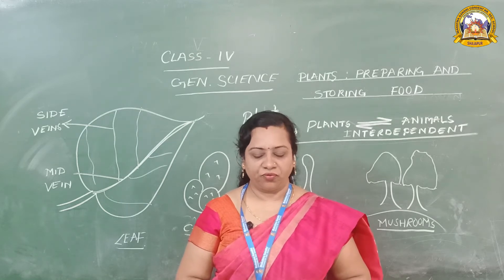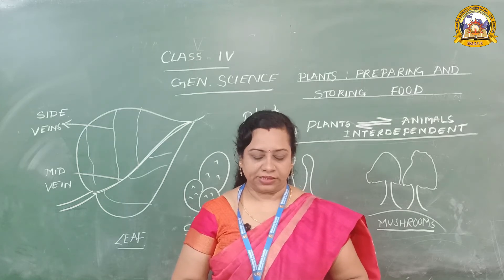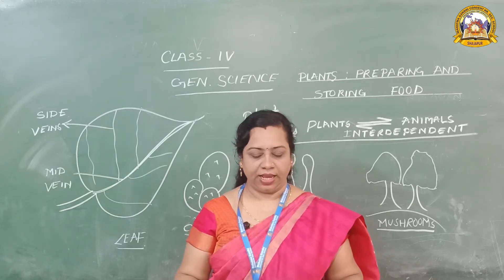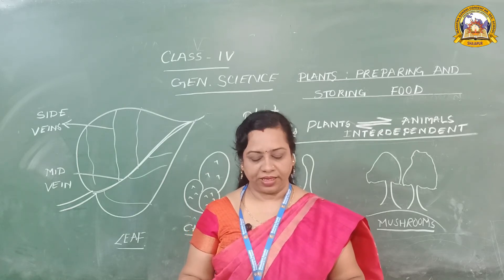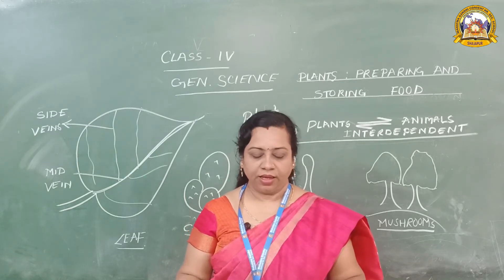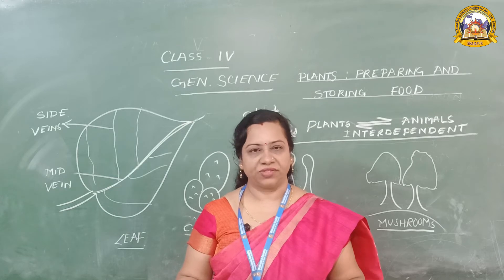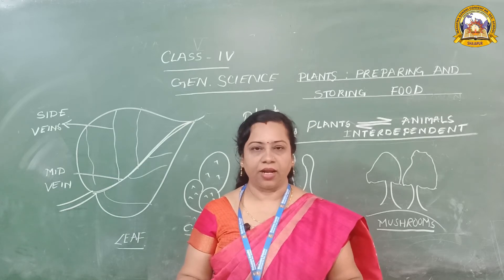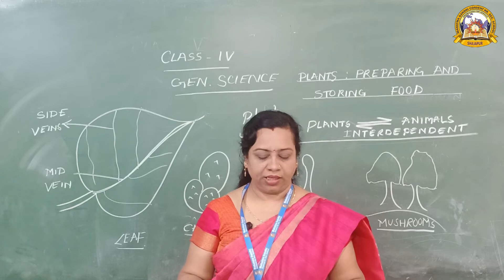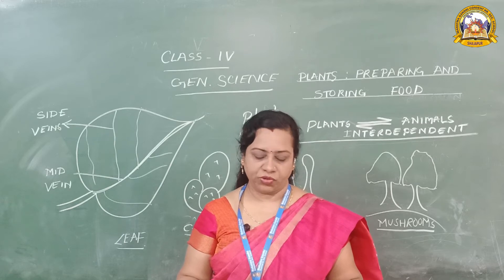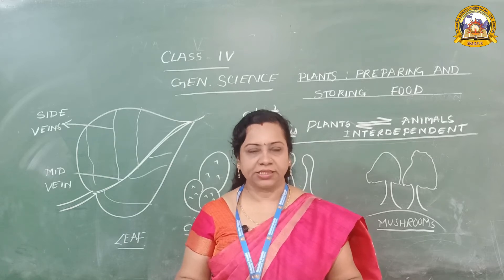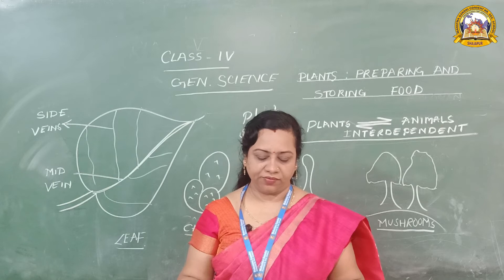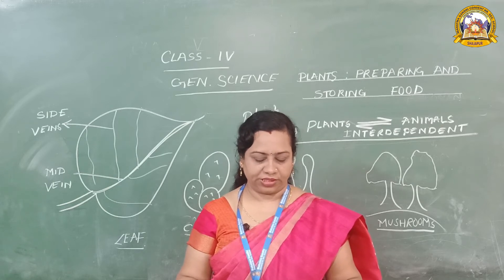Food for plants: a plant takes in water from the soil and carbon dioxide from the air. In the presence of sunlight, green leaves change air and water into food in the form of sugar. Sunlight provides energy to these leaves for preparing food.